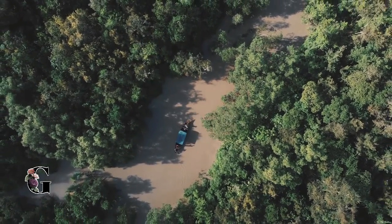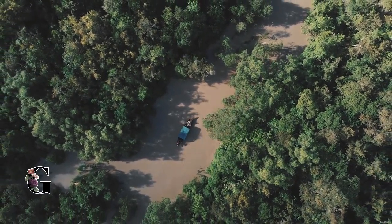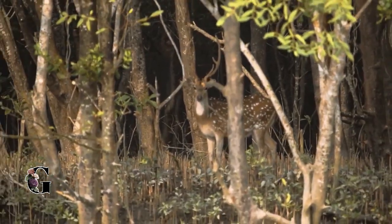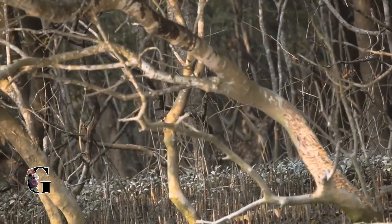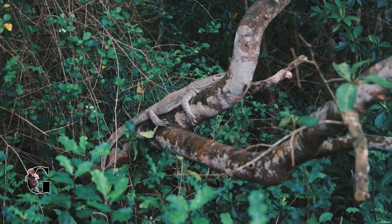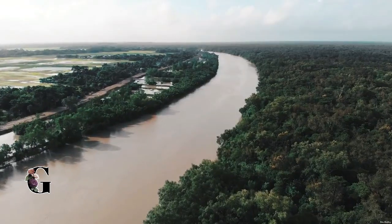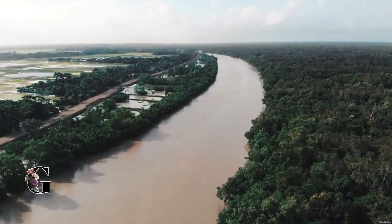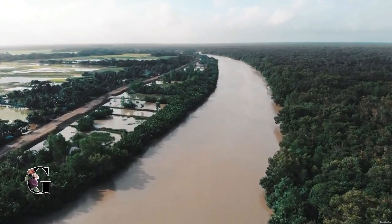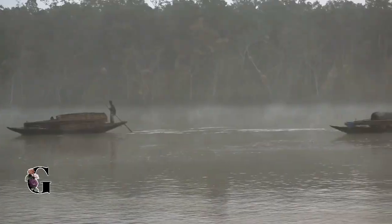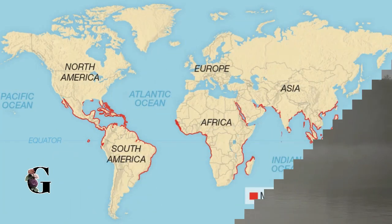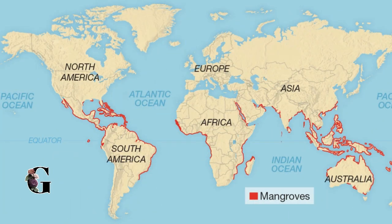A mangrove is a shrub or a small tree that grows in coastal saline water. Mangroves are called salt tolerant trees or halophytes. The mangroves contain a complex soil filtration system and an intricate root system to cope with the saltwater immersion and wave action.